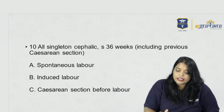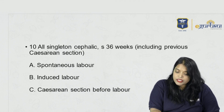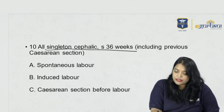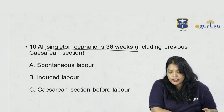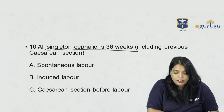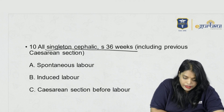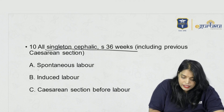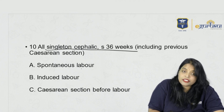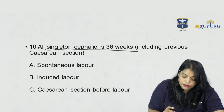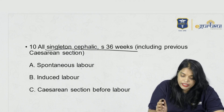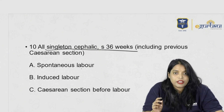Group 10 is preterm — all singleton, cephalic, before 36 weeks. Again divided into: A — spontaneous labor, B — induced labor, C — cesarean section before labor.